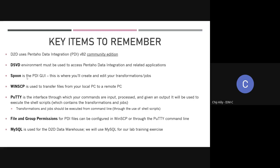Spoon is the GUI of Pentaho — this is what we use to create and edit transformations and jobs. WinSCP is what we use to transfer files from your local PC or from one environment to the Pentaho server. In order to execute these transformations and jobs from the command line, they need to be on the D2D Pentaho server. You can develop files wherever you want — in DSVD or outside — but to put them onto the D2D Pentaho server and execute them from the command line, you have to be within DSVD and use WinSCP to transfer those files.